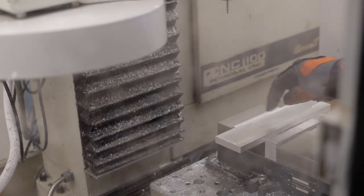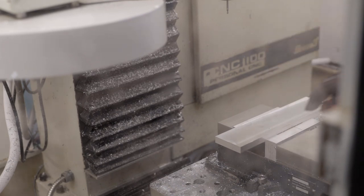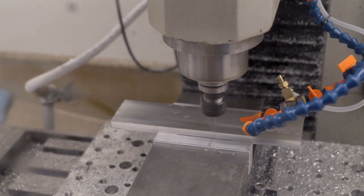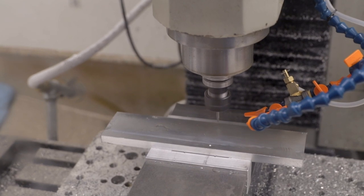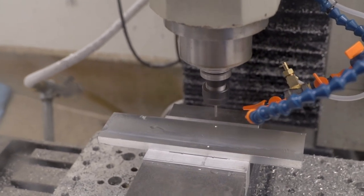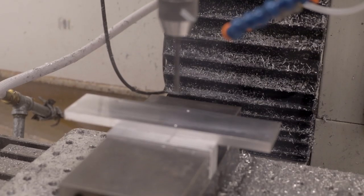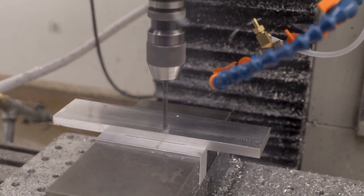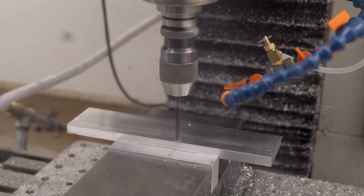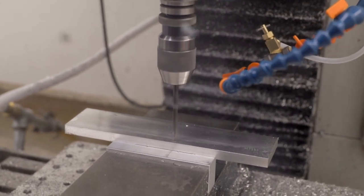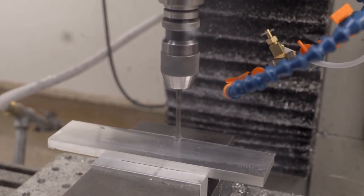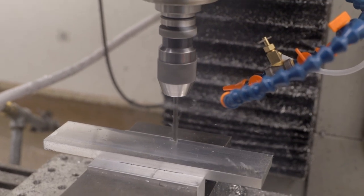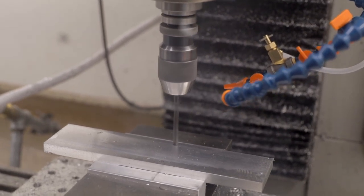This first op is to spot drill and then drill two holes that we're going to use when we flip the part to set Z0 off of. I've got it slowed way down because I couldn't get it to peck. Maybe it's doing it and I just can't see it. Yeah, it is. Cool. Nonetheless, slowed it way down.